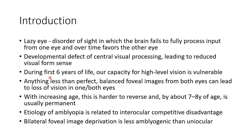During the first six years of life, our capacity for high level vision is vulnerable. During this time, anything less than perfect balanced foveal images from both eyes can lead to loss of vision in one or both eyes. With increasing age this is harder to reverse, and by about seven to eight years of age it is usually permanent.